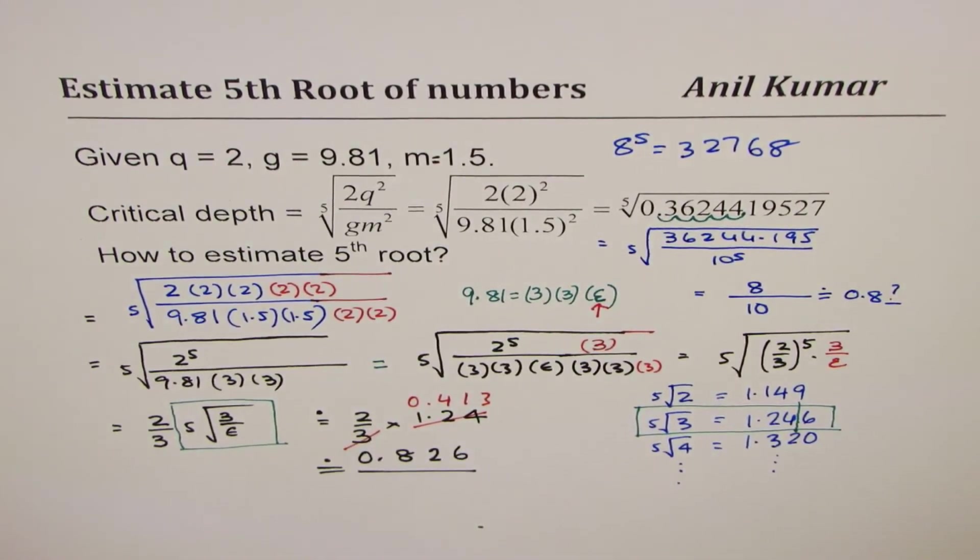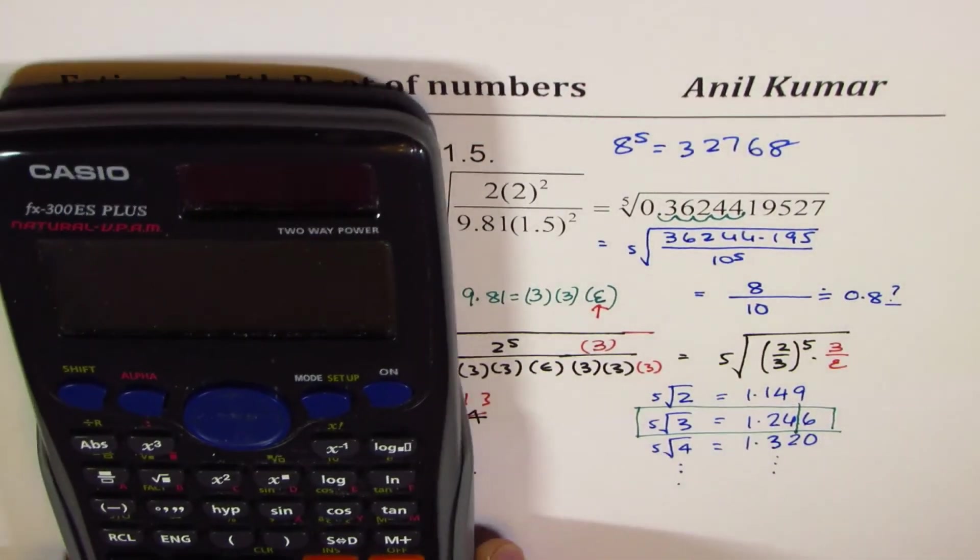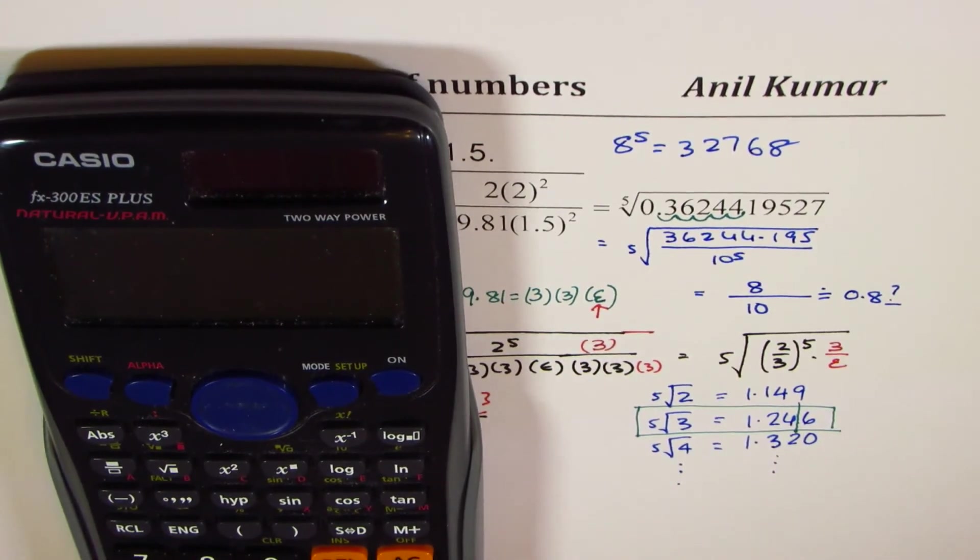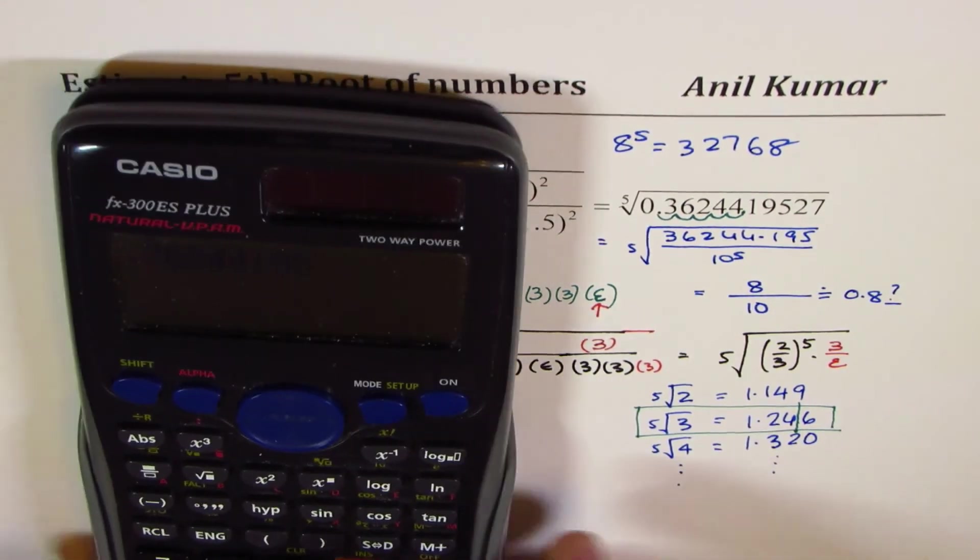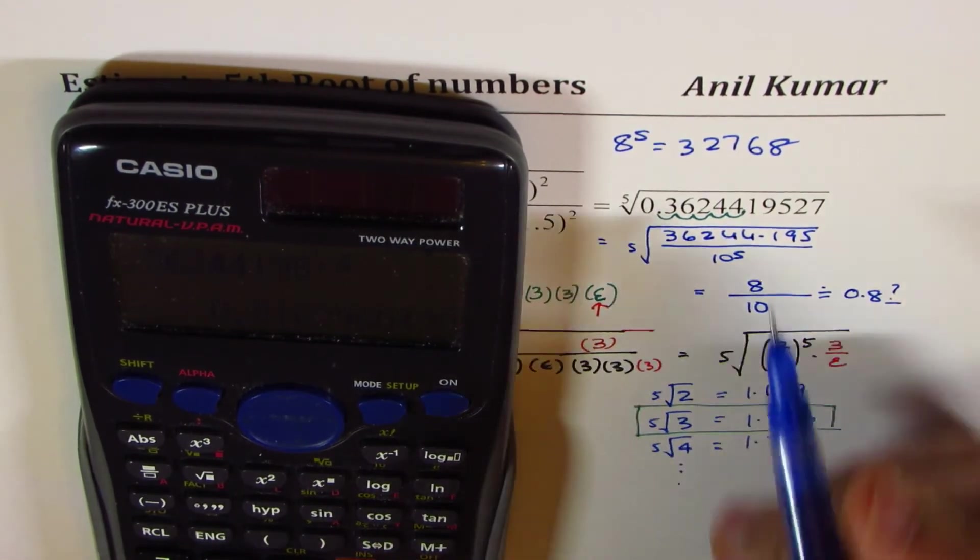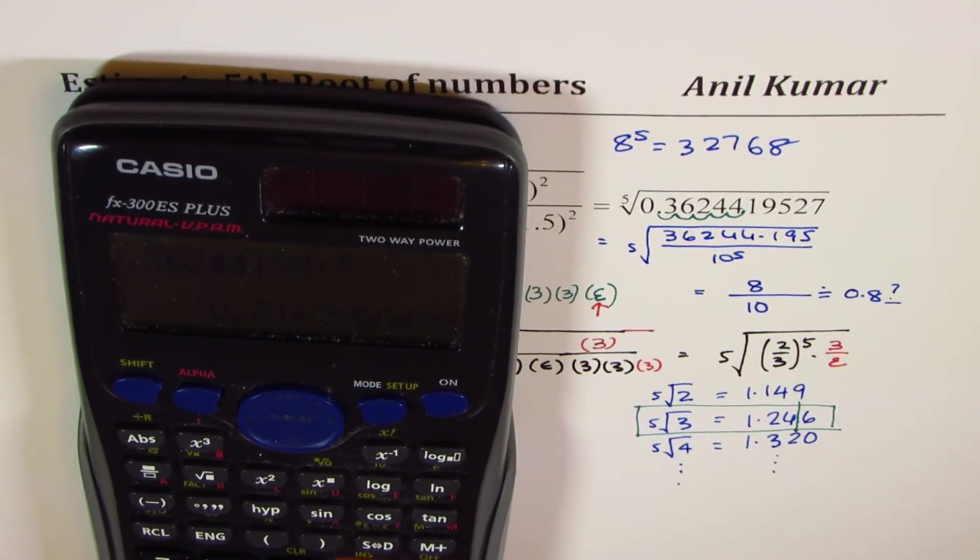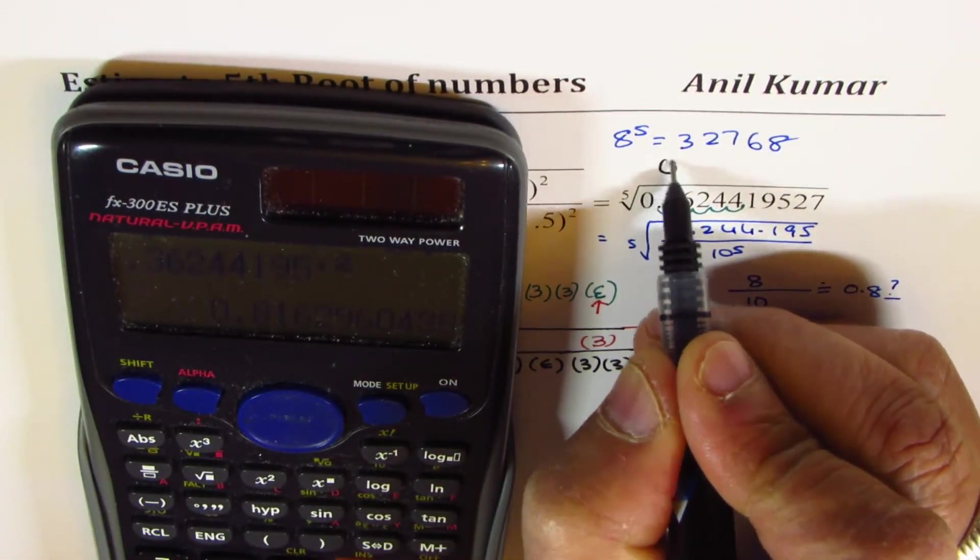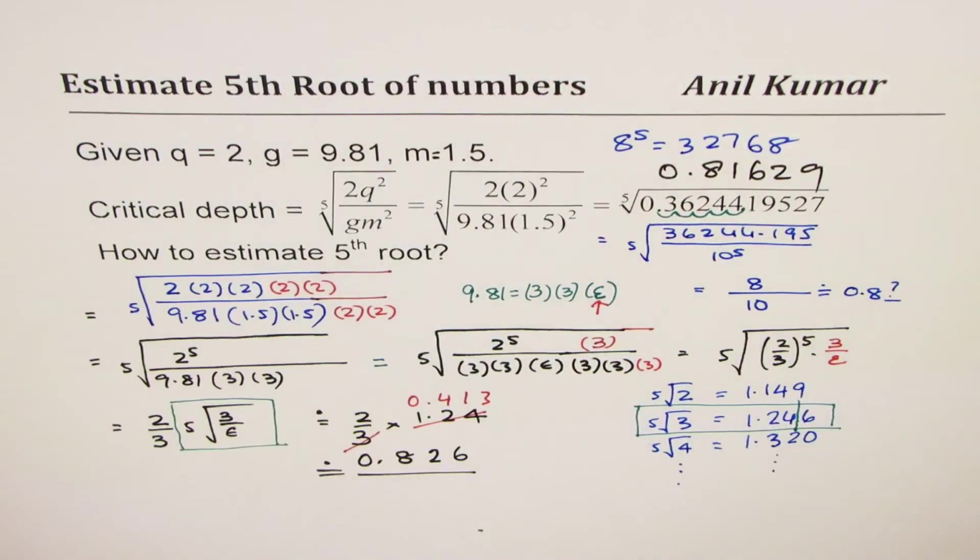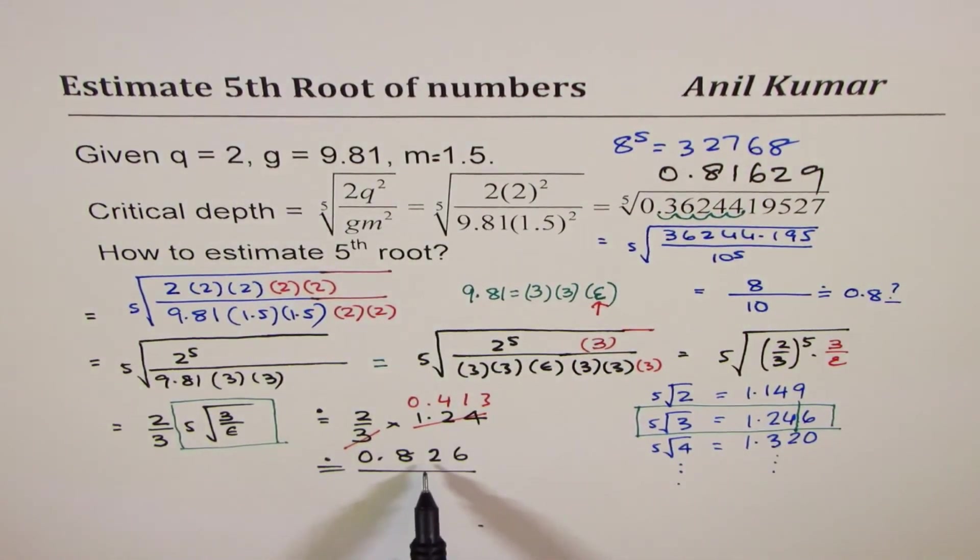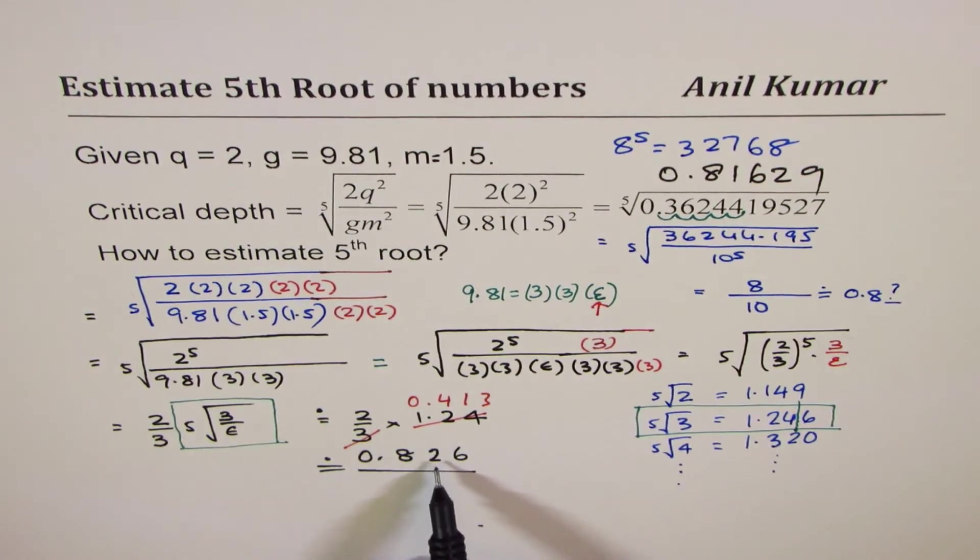Now let me calculate the real answer, which is 0.36244195 to the power of 0.2, which is fifth root. So the real answer here is 0.81629.